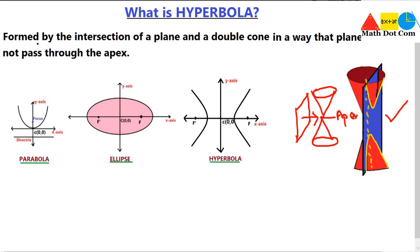First, let's review parabola. A parabola is formed by the set of points such that the distance of a point P from the focus equals its distance to the directrix. In mathematical form: PF = PM, where M is the point on the directrix. When this condition is met, the shape we get is a parabola.